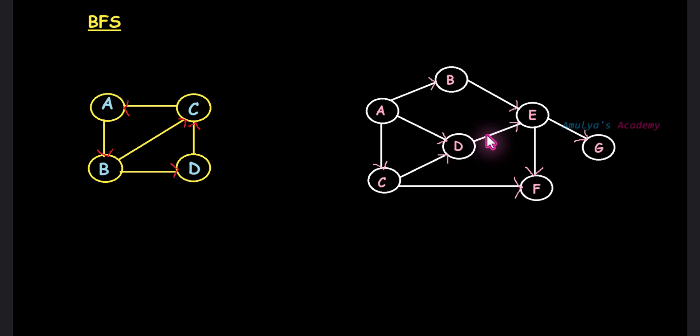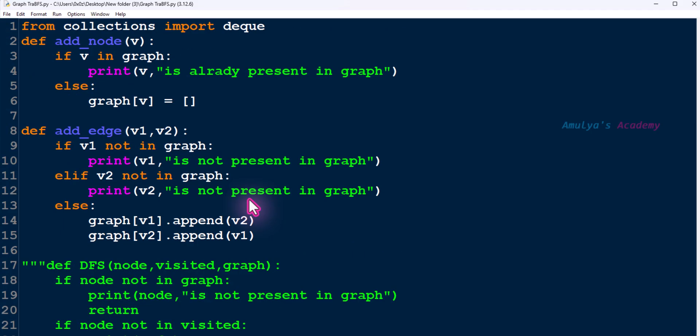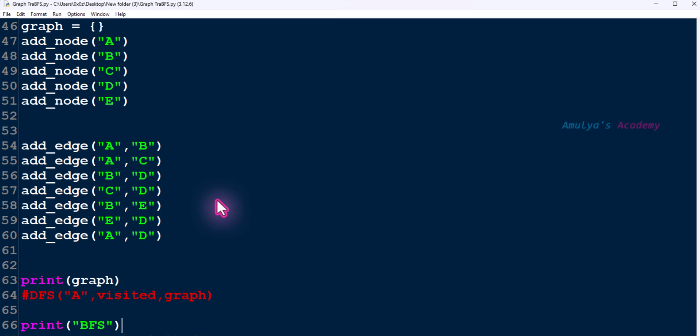In the previous tutorial we wrote a Python program to check whether a given graph is a connected or disconnected graph using BFS algorithm. Let's use the same method here today to find out whether a given directed graph is strongly connected or weakly connected, and let's see whether it works or not. This is the program which we wrote in the previous tutorial, and that program is written for an undirected graph.